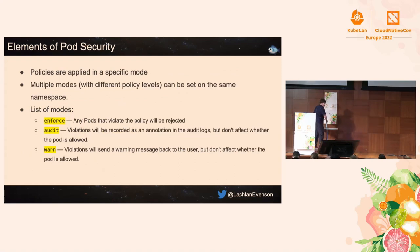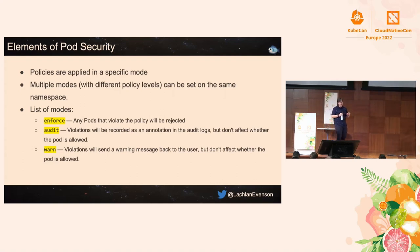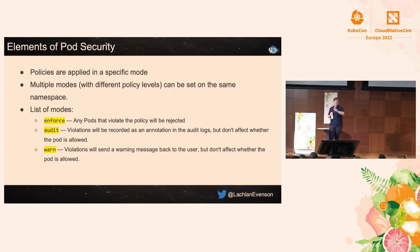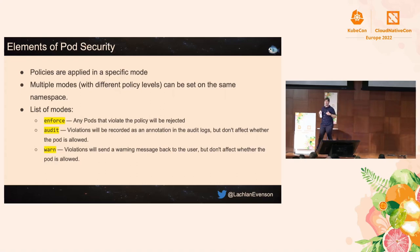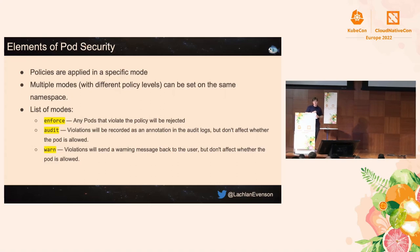These policies are applied in a specific mode, and there are three different modes that can be set on a namespace. Enforce: strictly blocks non-compliant pods. Audit: posts something in the audit log. Warn: fires a warning message back to the user stating the resource is in violation of this policy, but still allows it to be created. With enforce, you get an error message back via kubectl saying the policy has been violated.